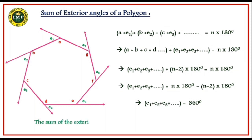Finally, the sum of the exterior angles equals 360°. So for any sided polygon, the sum of the exterior angles is fixed and always equals 360°.